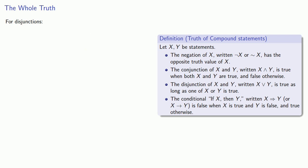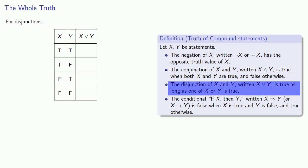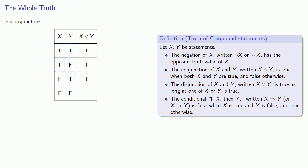For the disjunction, we again have two statements. X could be true and y could be true, or x could be true and y false. Similarly, x could be false and y true or false. A disjunction only needs one of its components to be true, so the disjunction will be true in all these cases. The only time it will be false is when both statements are false.